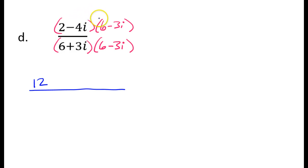Let's see, inner, I have negative 24. Outer, I have negative 6. So that's going to be negative 30i. And then when I multiply negative 4i times negative 3i, that is positive 12i squared. So that's what I have so far in the numerator.